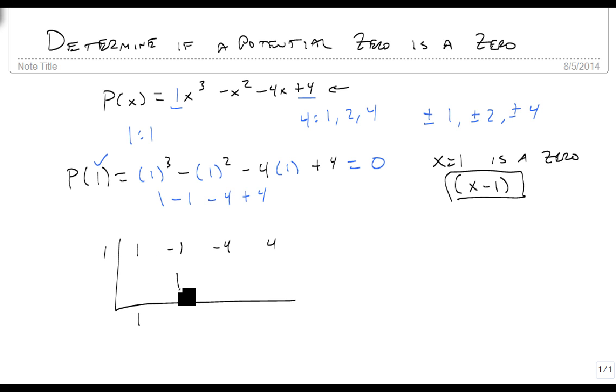So now we bring down the 1. 1 times 1 is 1. That gives me a zero. 1 times 0 is 0. That gives me a minus 4 and a zero. So I get a zero in the last spot, and that means that my remainder, which is what I get if I divide by x minus 1, is x squared minus 4. So my q(x), my quotient, my non-remainder piece is x squared minus 4.